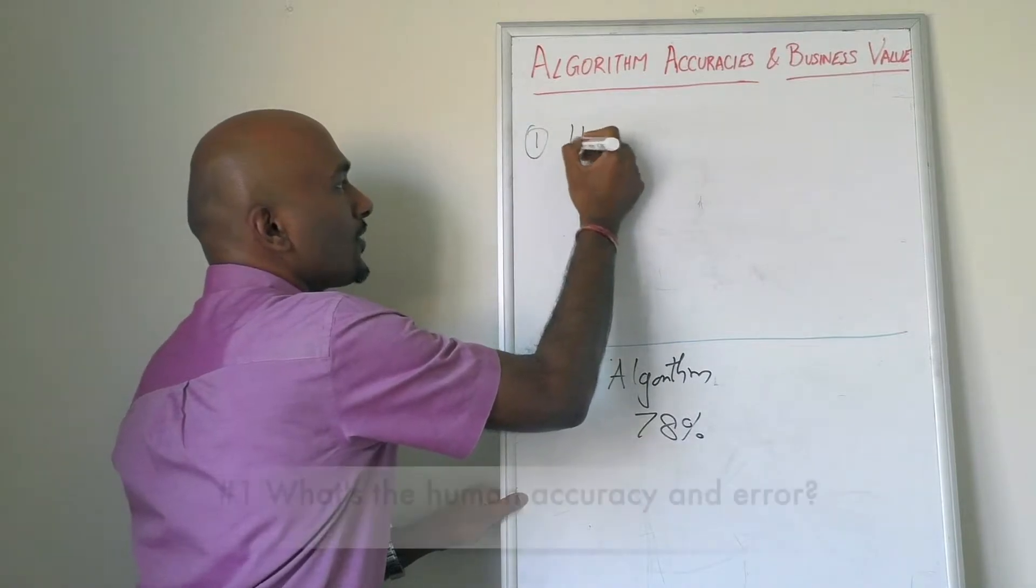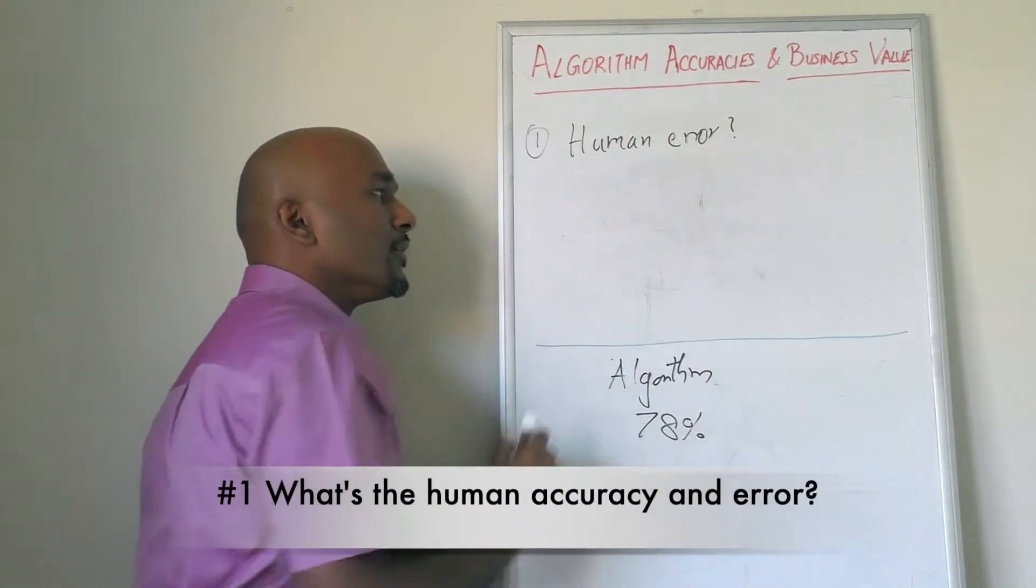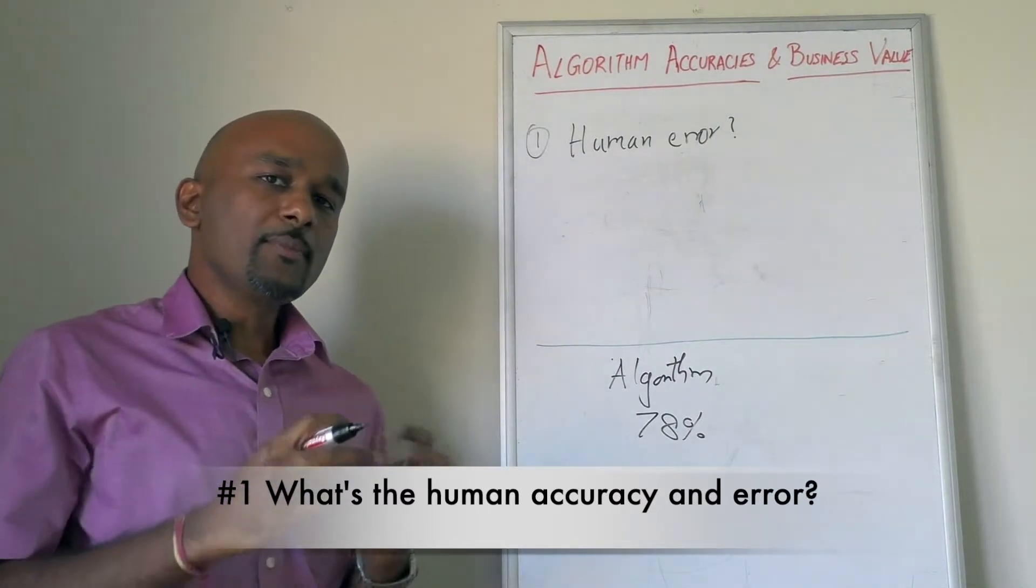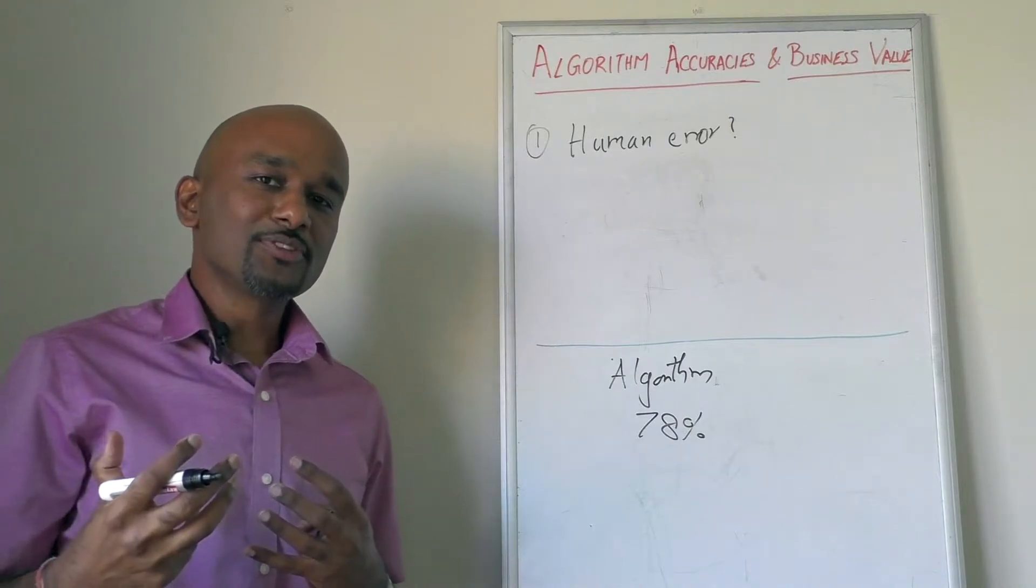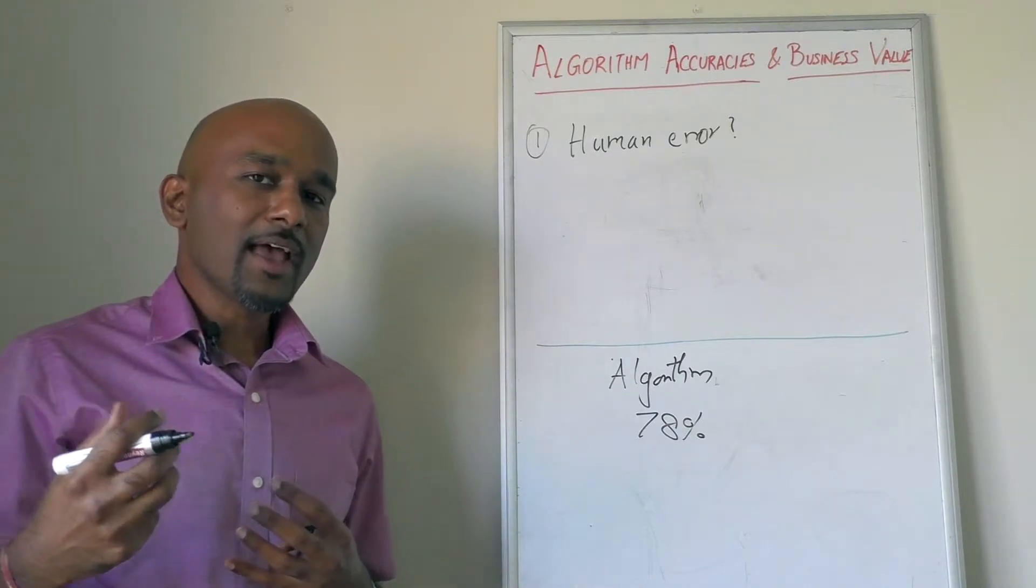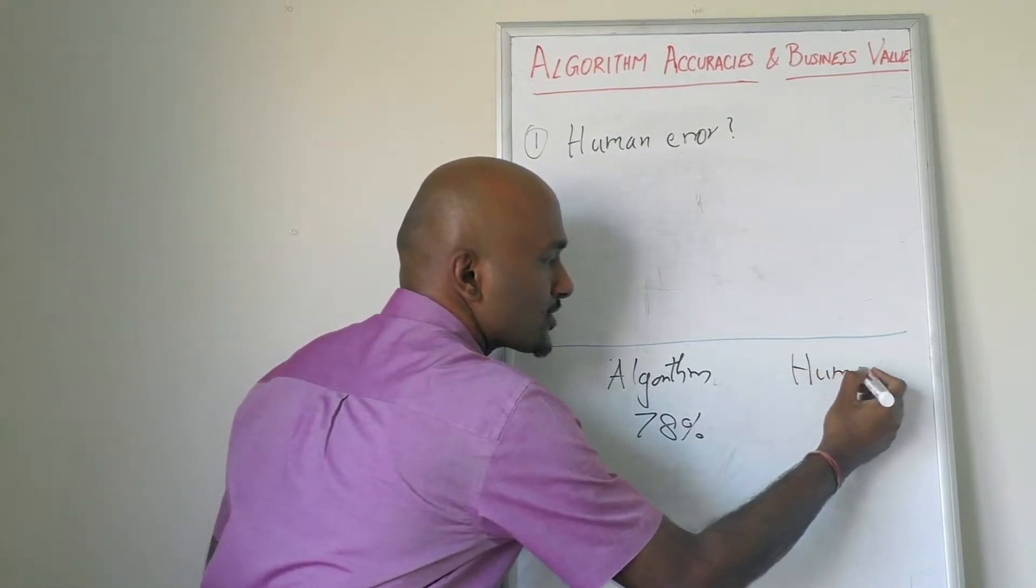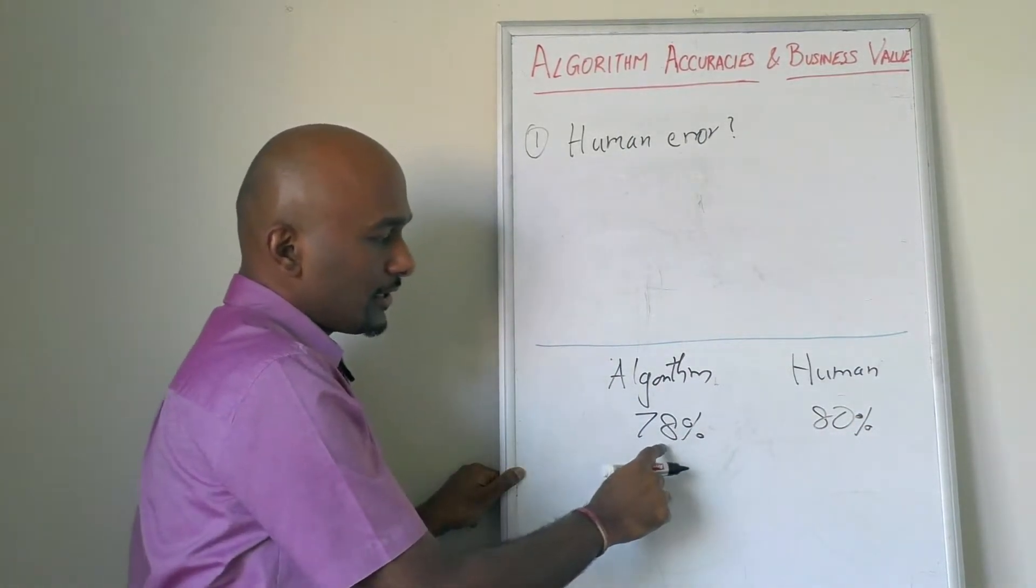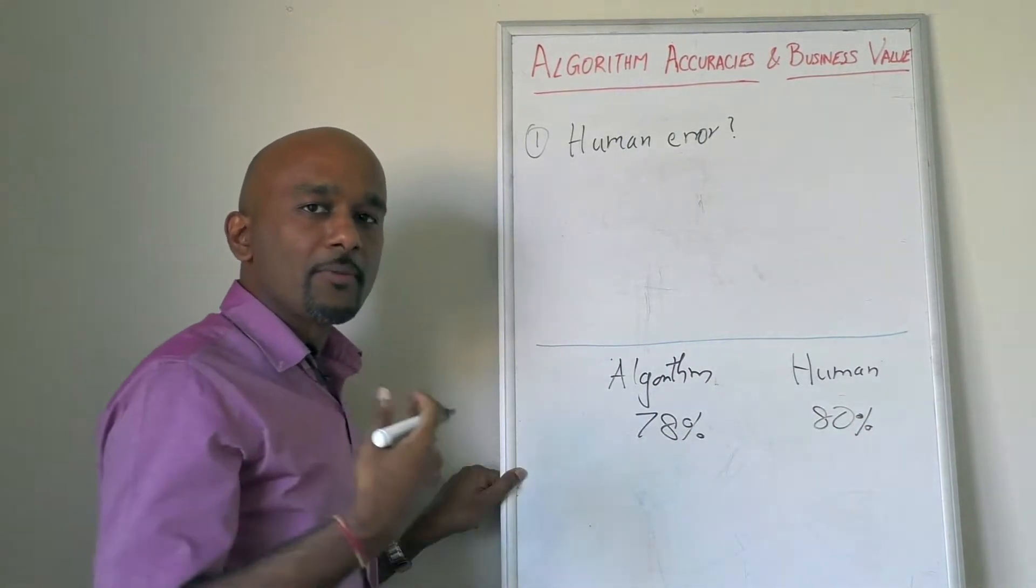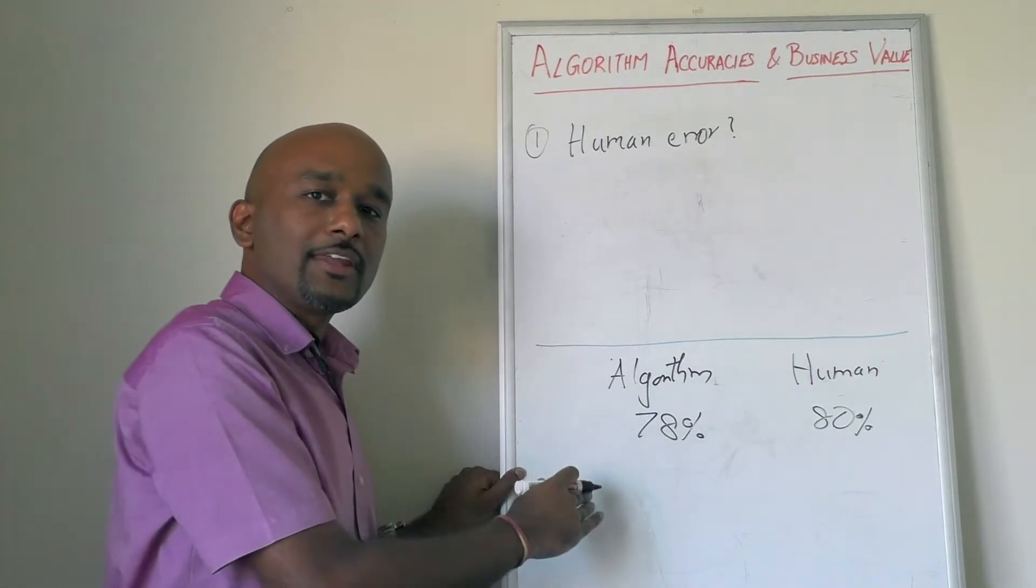Question number one: What is the human error rate? It's common to assume that humans are able to do a given task perfectly. But given the volumes and the fatigue factor and the skill level of the team staff, there is likely to be an error rate. Let's say you measure it and you find out that it is at 80%. So now this becomes a comparison. You have a benchmark to look at 78 versus 80, as opposed to 78 versus 100.